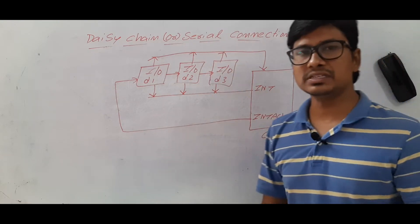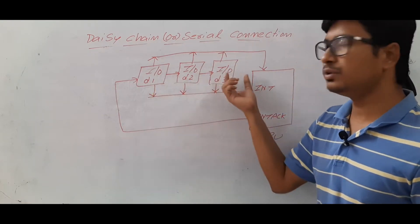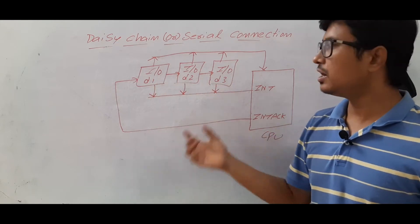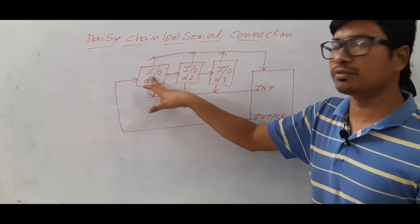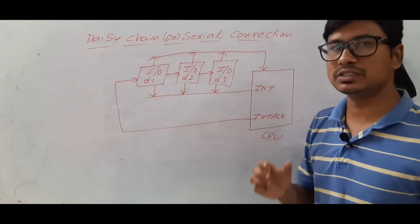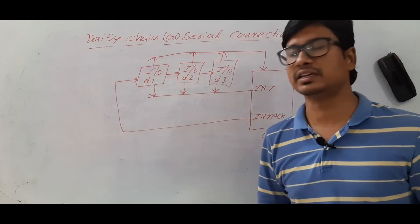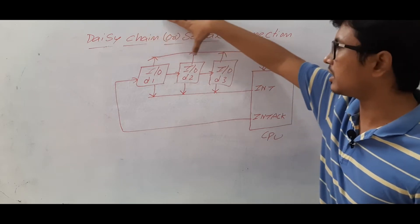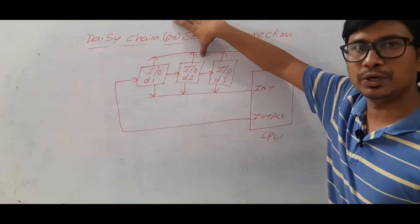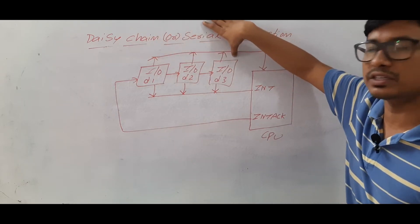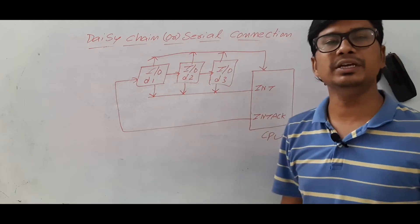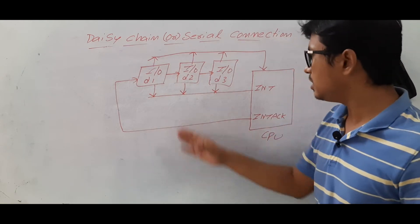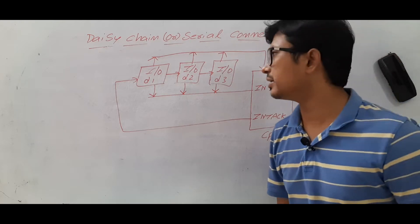What is meant by serial connection? All the IO devices are connected in a serial way. IO device one, IO device two, IO device three — how are they connected? Based on their priority. This device has the highest priority compared to the others, so they are ordered based on their priority. How will this communication happen?